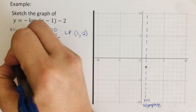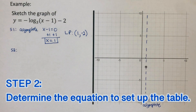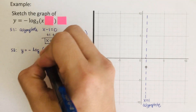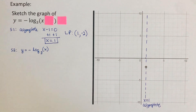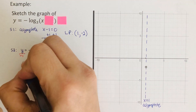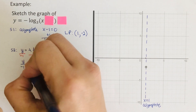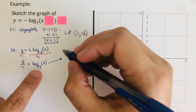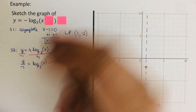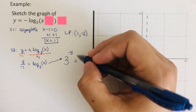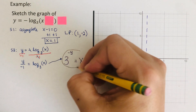Step 2: determine the equation and set up the table. We cover the h and the k. Since the coefficient is negative, we divide both sides by negative one, giving y over negative one equals log base 3 of x. Converting to exponential form: 3 to the power of negative y equals x. This is the equation we'll use for the table.